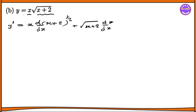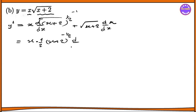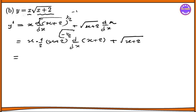D y, D x. And then D x by D x. So x plus 2, the whole value is 1.2. This is 1.2. So x plus 2, the whole power minus 1 by 2. D by dx of x plus 2. The power is x plus 2. Dx by dx is 1. So the power is equal to 1. So x plus 2, the whole power minus 1 by 2.